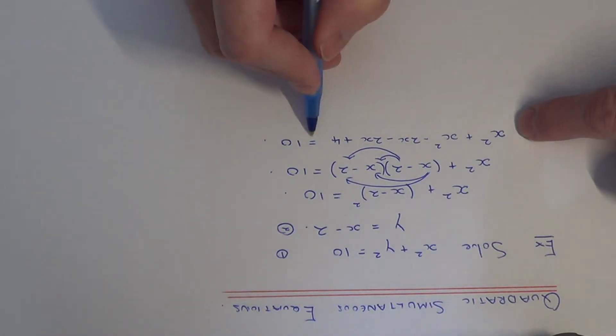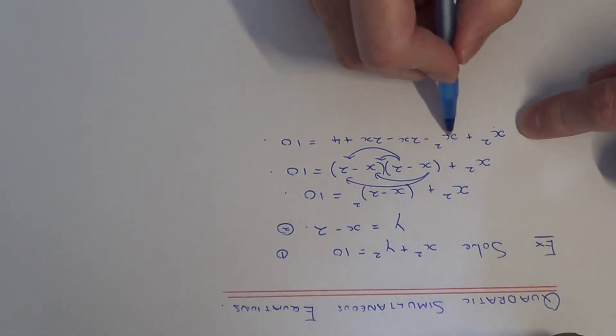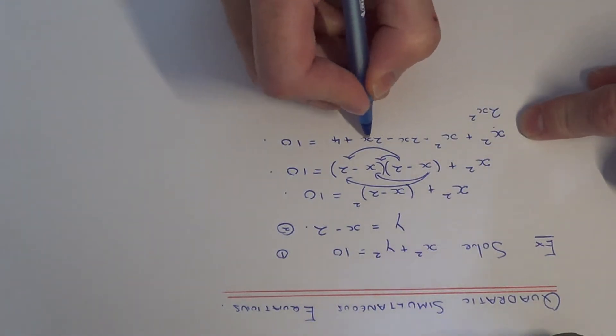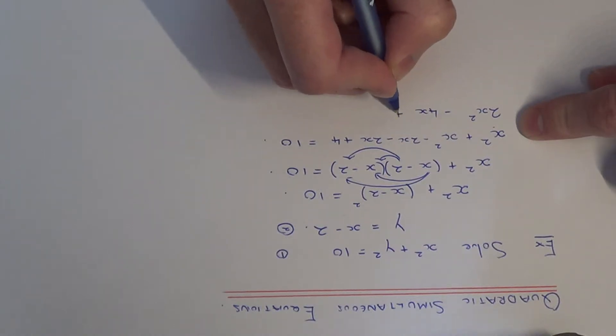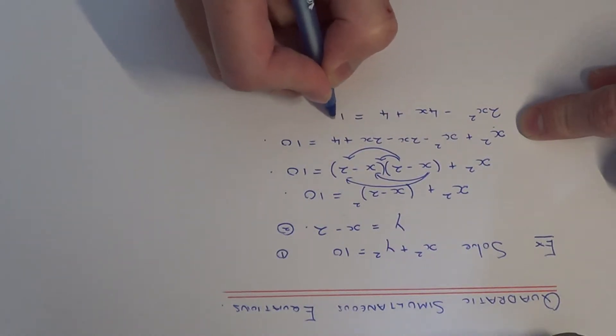So if we just simplify the terms on the left-hand side, x squared and x squared is 2x squared, minus 2x minus 2x is minus 4x, and we've got the plus 4 equals 10.